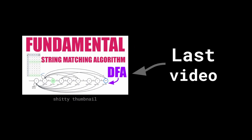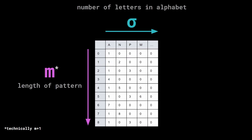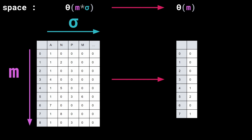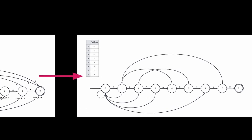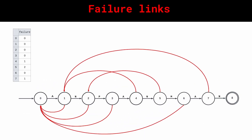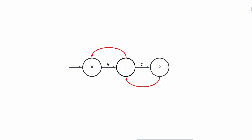In the last video, I showed how to build a DFA to find a pattern in a text. We did that by constructing a transition matrix of size M times the number of letters in the alphabet. There is actually a way to reduce the space occupied by this matrix by transforming the DFA into a different type of automaton containing a new type of transitions called failure links. For each of our states in the DFA, instead of having a transition for each letter in the alphabet, we are going to have just one transition to the next state and one failure link.